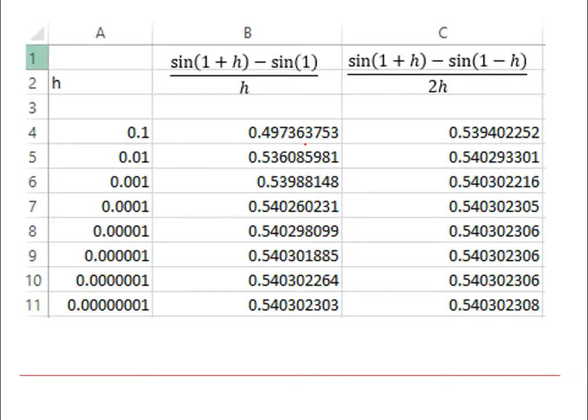Here we have a comparison between the values that we had last time in the previous video for the forward difference method, and then the ones for the central difference method. We can see that the central difference method converges more quickly than the forward difference method.